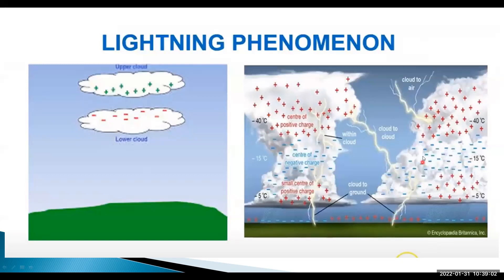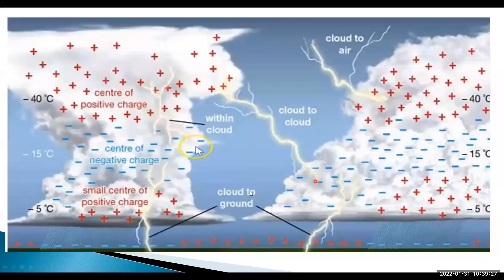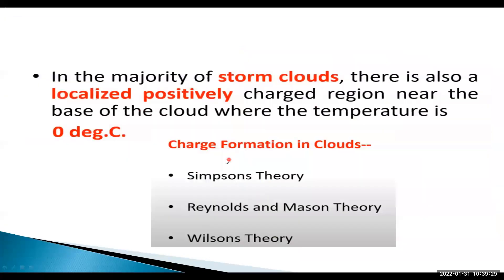Cloud to cloud is the first type, second is cloud to air, and cloud to ground. Lightning phenomena also takes place inside the cloud. In this way, lightning falls to the ground because of the huge potential difference between cloud and ground.